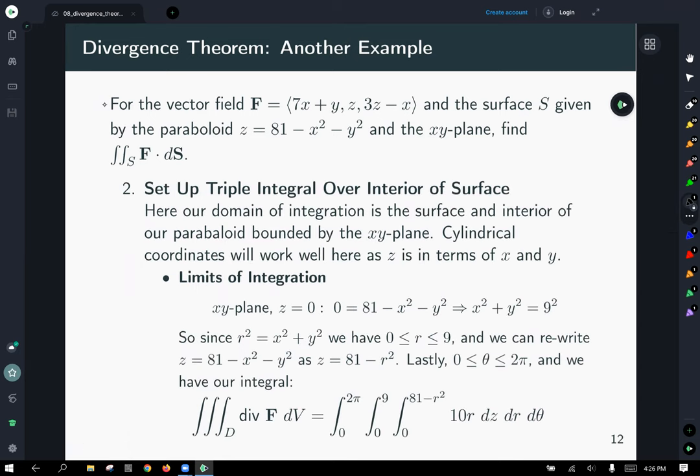Now it's time to set up our triple integral over the interior of our surface. So it's the interior of that paraboloid thing. So cylindrical coordinates seem like a reasonable thing to try here. And so if we just set z equal to 0, we see that the base of that paraboloid is x squared plus y squared equals 81 or 9 squared. So we see that we've got it in a nice format where r is going to vary between 0 and 9, and we can rewrite z as z equals 81 minus r squared. Lastly, let theta vary between 0 and 2 pi, and we've done it.